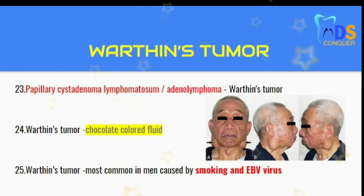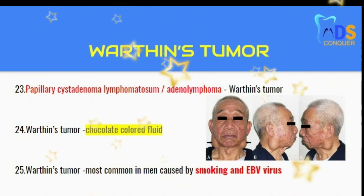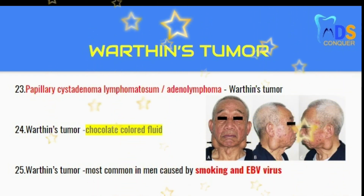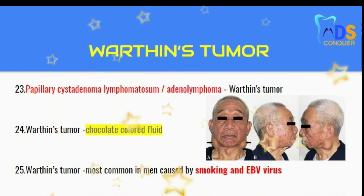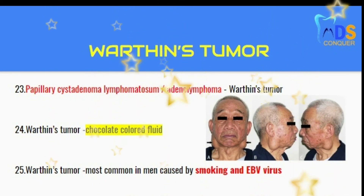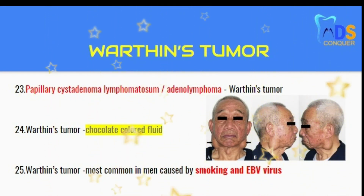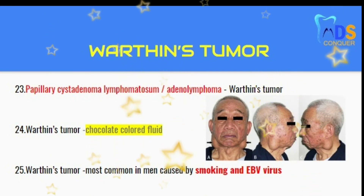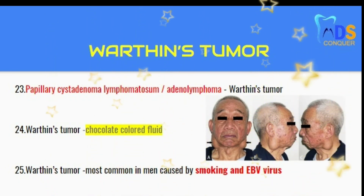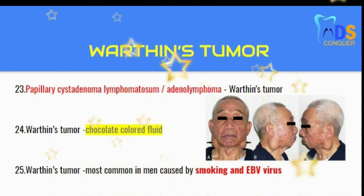Now about Warthin's tumor. Point 23: papillary cystadenoma lymphomatosum and adenolymphoma are synonyms of Warthin's tumor. Point 24: Warthin's tumor contains chocolate-colored fluid. Point 25: Warthin's tumor is most commonly seen in men due to smoking and Epstein-Barr virus association.